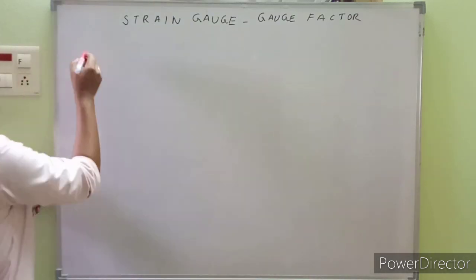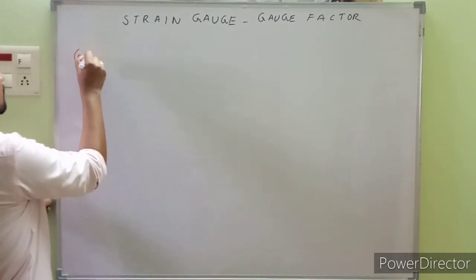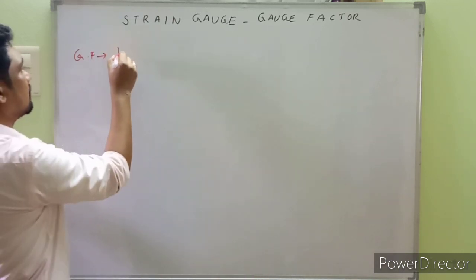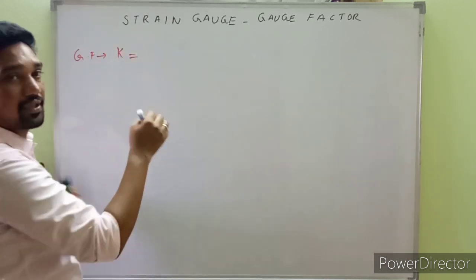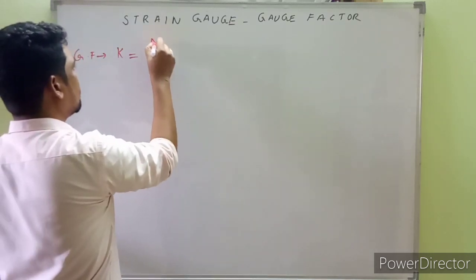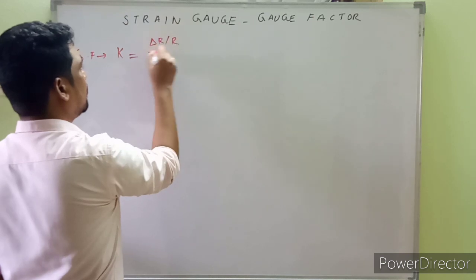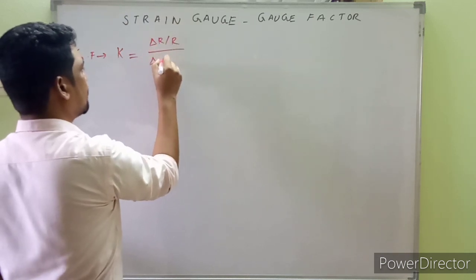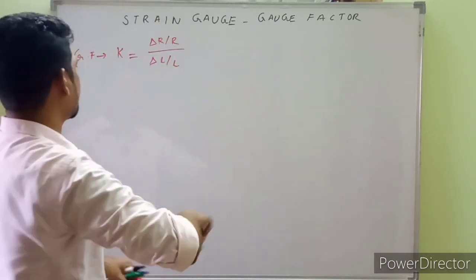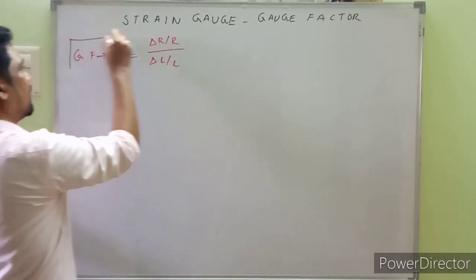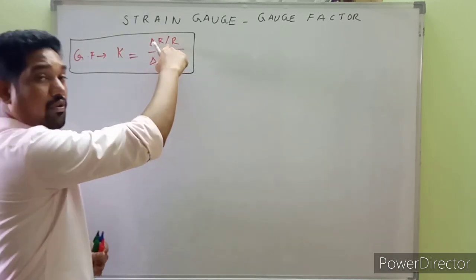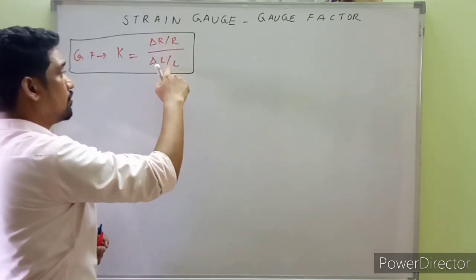The gauge factor is denoted with the uppercase alphabet K, and it is defined as the fractional change in resistance divided by the fractional change in length. So gauge factor K = (δR/R) / (δL/L).